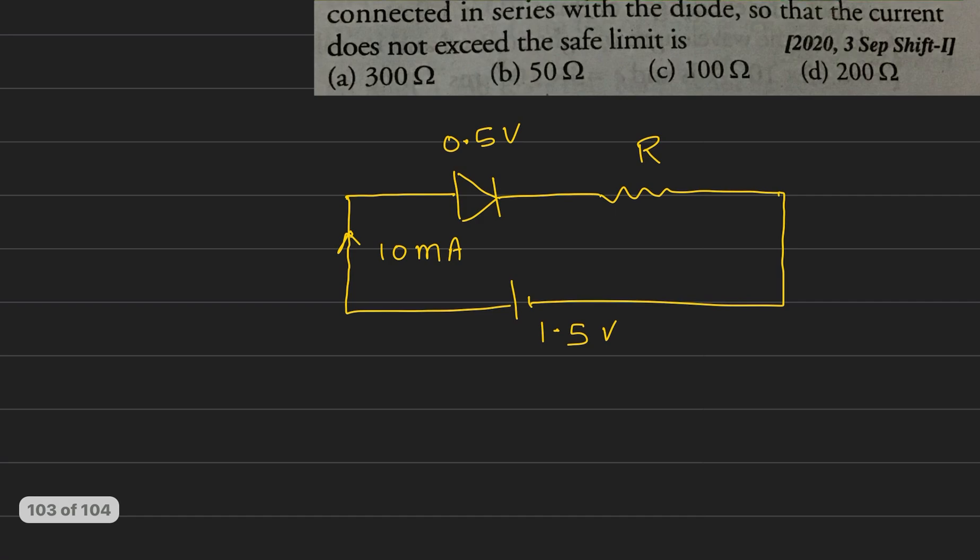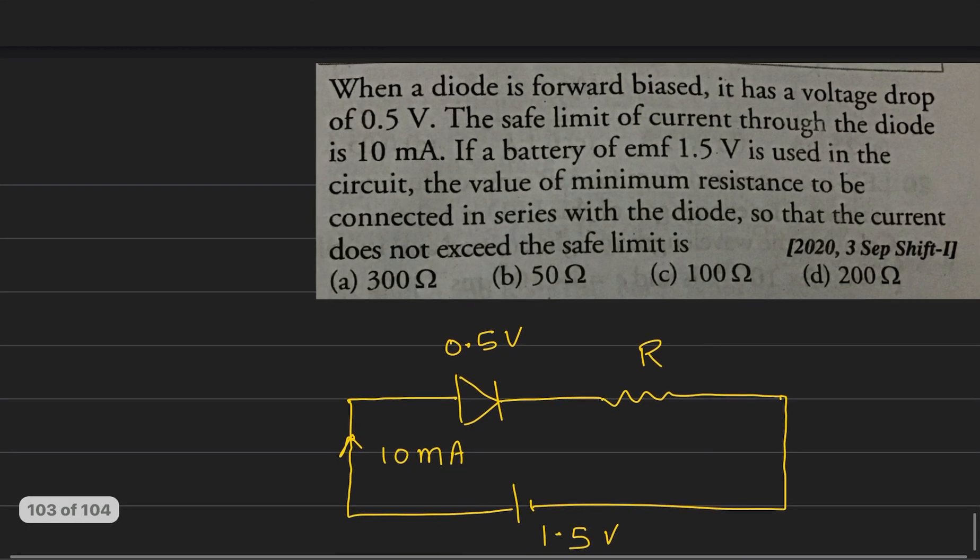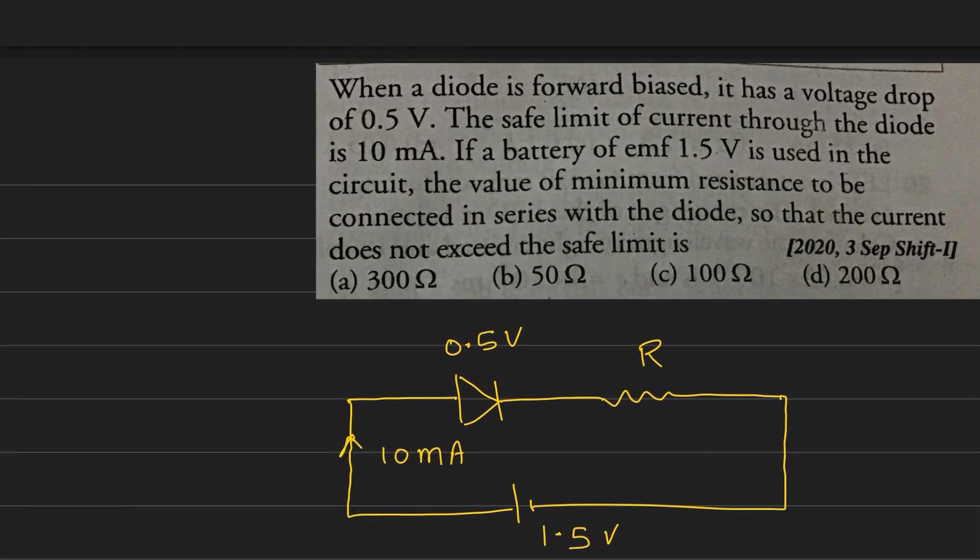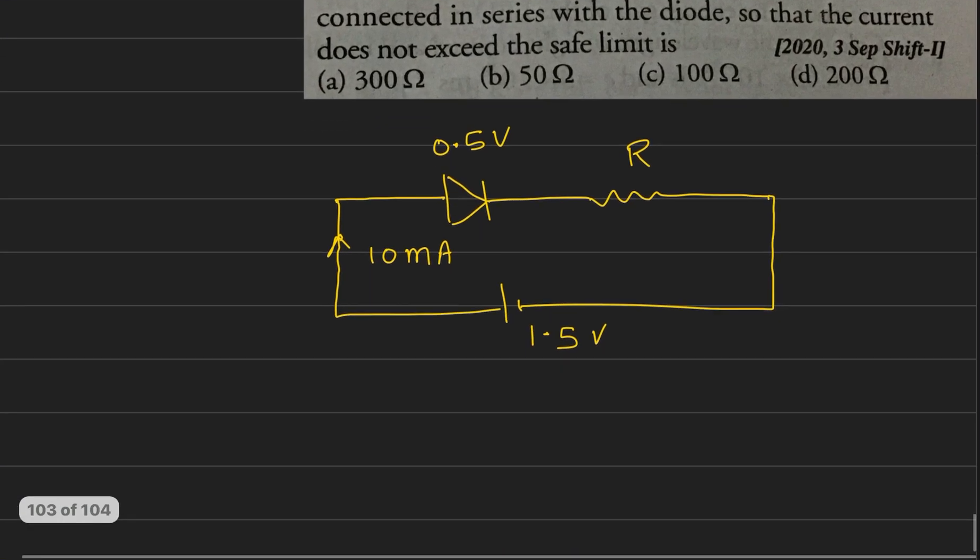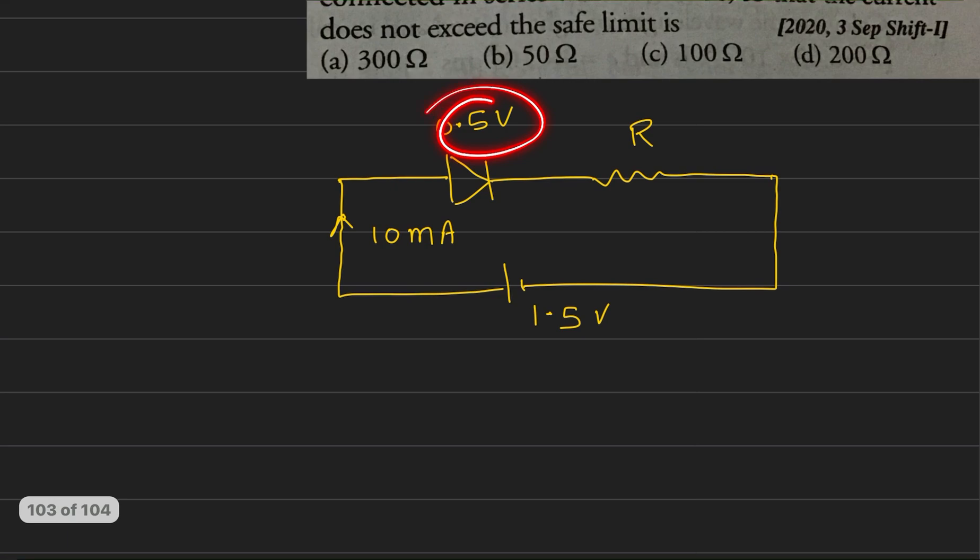We know that the potential barrier is the main potential which is opposed. So the net voltage is 1.5 minus 0.5, that is 1 volt.